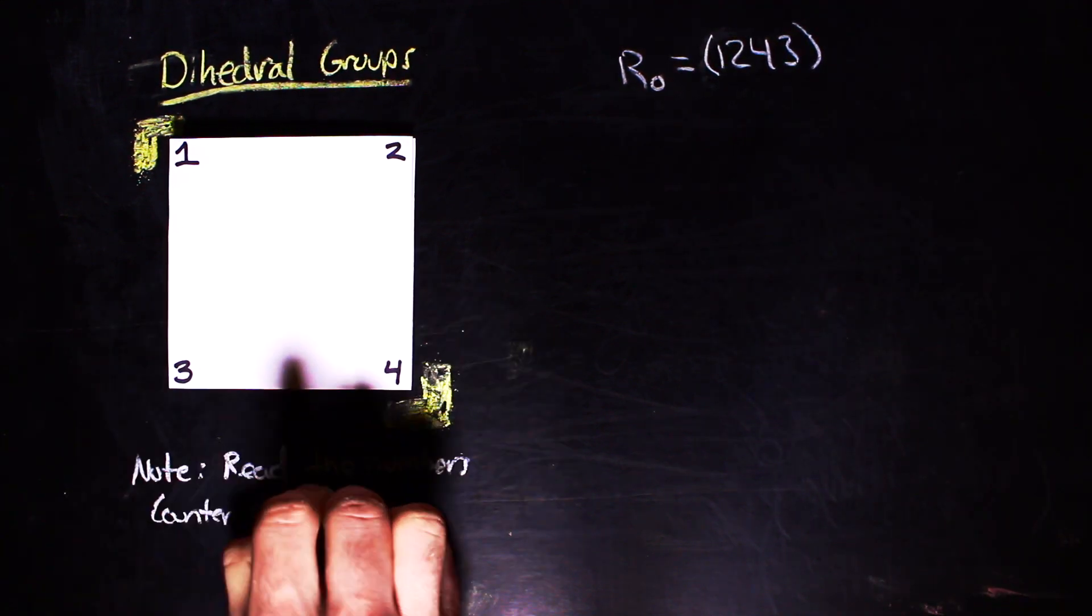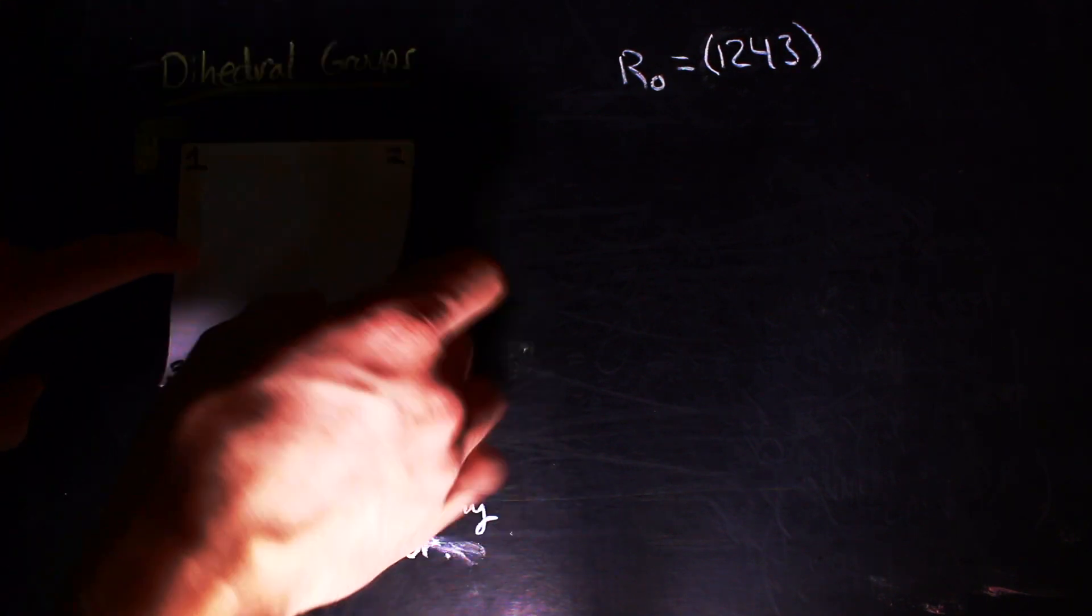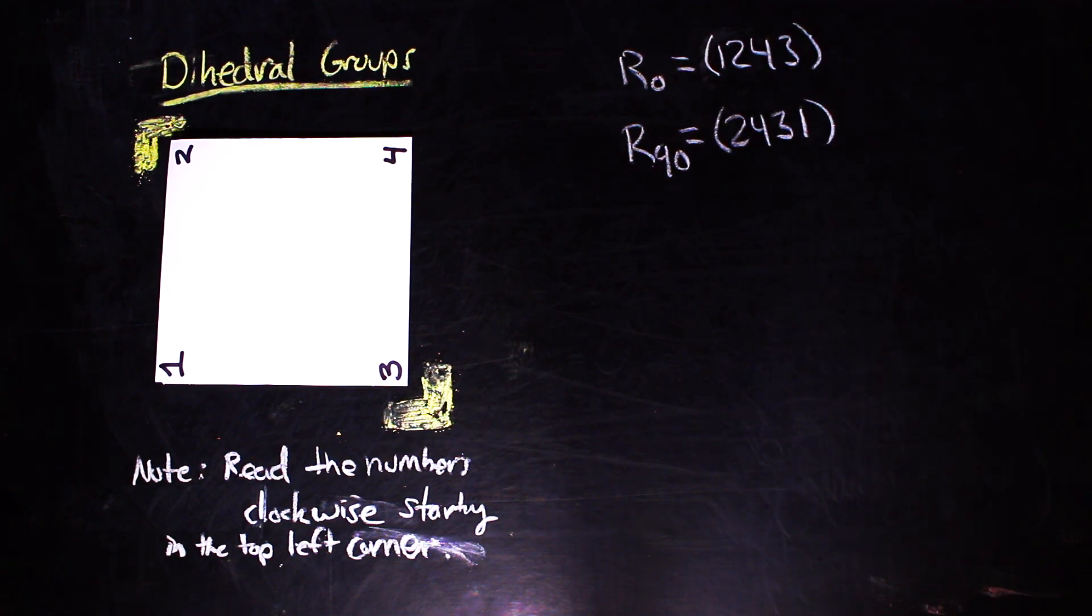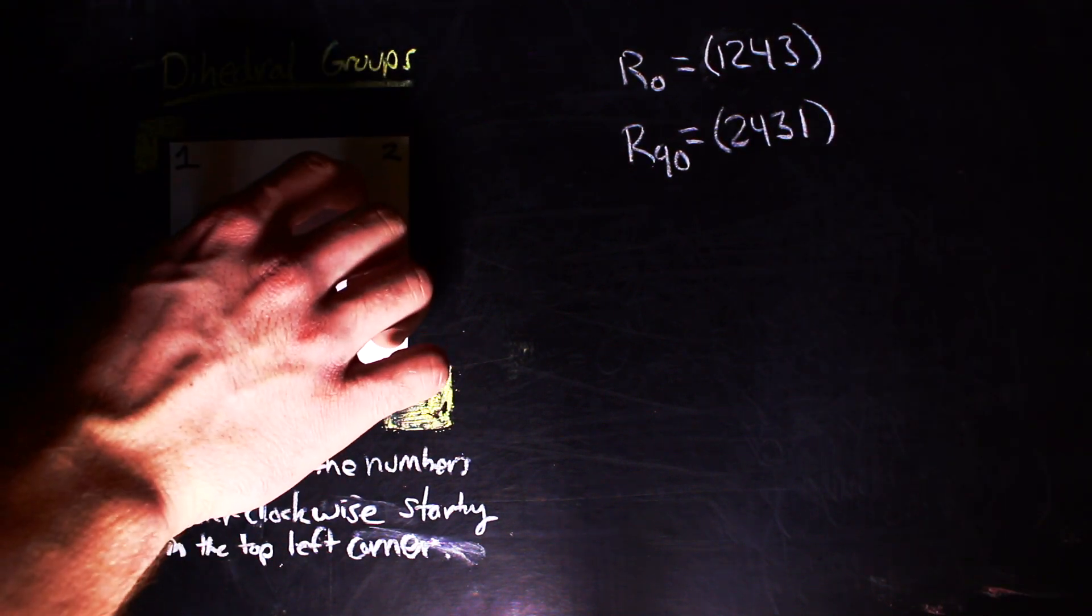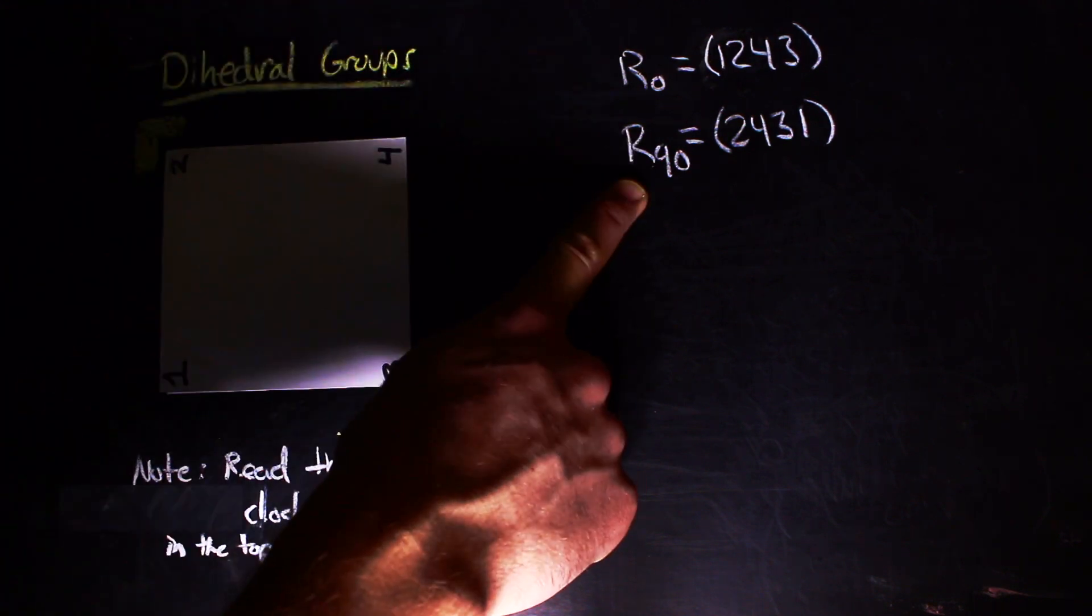Then we can flip and rotate the square as before from this position and record the clockwise reading of the corners. Here's the string that you get from rotating 90 degrees. I'll give you a second to pause the video and try to find the rest of them on your own.